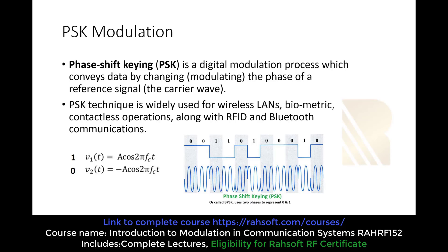In this part we are going to talk about the two-level PSK signal. When the PSK signal is two-level, the bit rate is equal to the baud rate and we have two levels: zero and one from the binary side. We are going to call this BPSK. PSK and BPSK are the same thing — they don't have any difference.